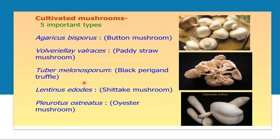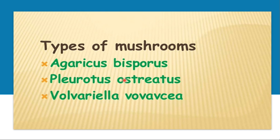These are the varieties of mushrooms cultivated commercially throughout the world, not only in India. The five important types are: Agaricus bisporus — the button mushroom; Volvariella volvacae — the padistraw mushroom; the oyster mushroom; Tuber melanosporum — the black Périgord truffle; Lentinus edodes — the shiitake mushroom; and Pleurotus ostreatus — the oyster mushroom. In India, we mainly cultivate three types: Agaricus bisporus, Pleurotus ostreatus, and Volvariella volvacae.